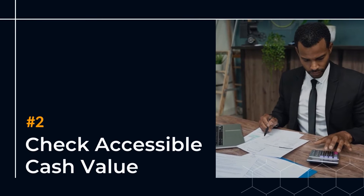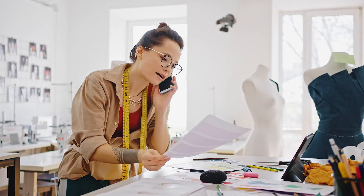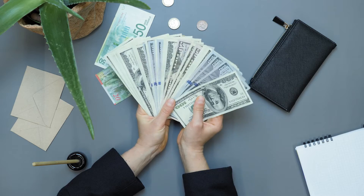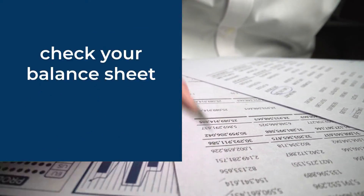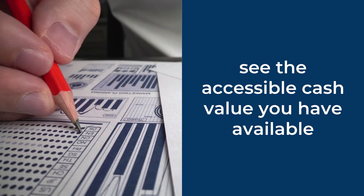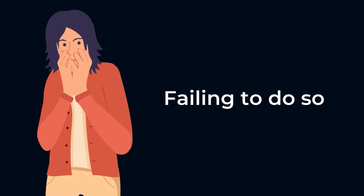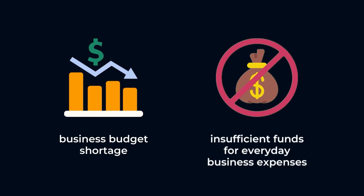Number 2: Check Accessible Cash Value. If you are in the business of running a company, one of your top priorities is to make sure that you have enough cash on hand to cover all your expenses. The easiest way to do this is to check your balance sheet and see the accessible cash value you have available. Likewise, inaccessible funds are trapped cash — like cash in store tills — and must be separated so it doesn't get counted. Failing to do so could result in a shortage in your business budget or not enough funds for the everyday expenses of your business.